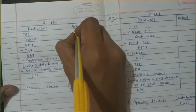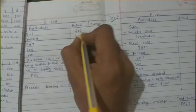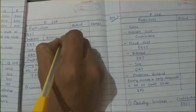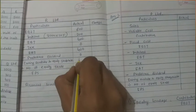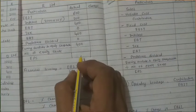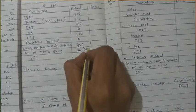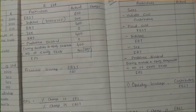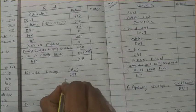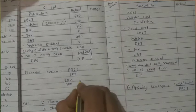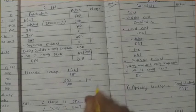Now for R Limited. EBIT = 600. Debenture = 2000, so interest = 2000 × 10% = 200. EBT = 600 − 200 = 400. Tax = 0, preference dividend = 0, earning available to equity = 400. Number of equity shares = 5000 ÷ 10 = 500. EPS = 400 ÷ 500 = 0.80. Financial leverage = 600 ÷ 400 = 1.5.